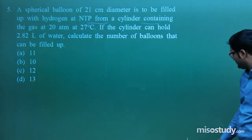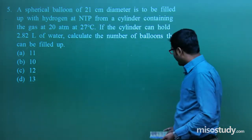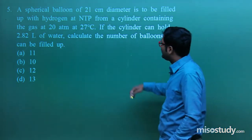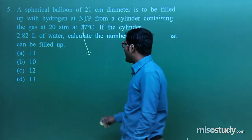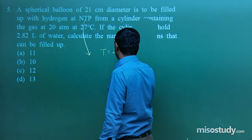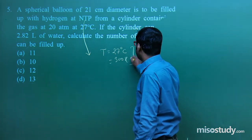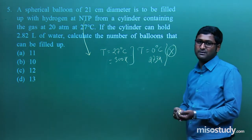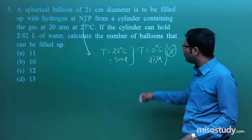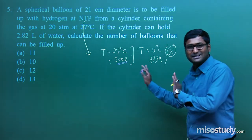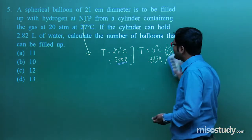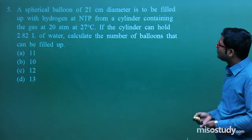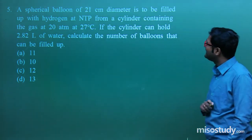Now question number 5. A spherical balloon of 21 cm diameter is to be filled with hydrogen at NTP. Note: at NTP, temperature should be 27°C, that is 300 K — not 0°C or 273 K which is STP. The question asks: filled from a cylinder containing gas at 20 ATM at 27°C — calculate the number of balloons that can be filled.